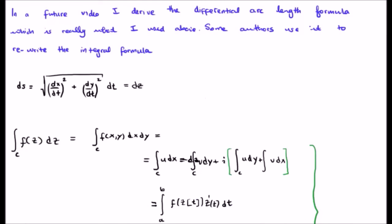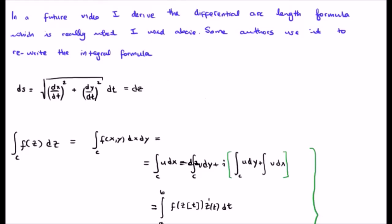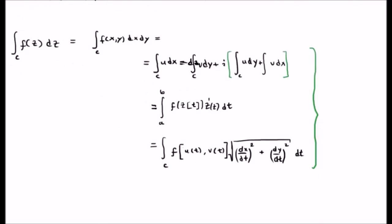In a future video I'm going to derive what's known as the differential arc length formula, which is really what I used above. Some authors use it to rewrite the integral formula in the following way, and it allows us then to have three representations of our line or contour integral.